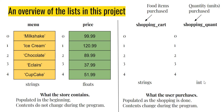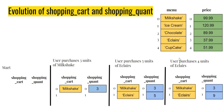These two new lists are populated as the shopping is happening, meaning their contents change as the program runs — contrast this with menu and price, which are created once and stay stationary. Let's take an example: menu and price exist from the beginning, and we start with empty shopping_cart and shopping_quant lists. If the user purchases three units of milkshake, we add milkshake to shopping_cart and add 3 to shopping_quant — this is an operation that changes the contents of the list.